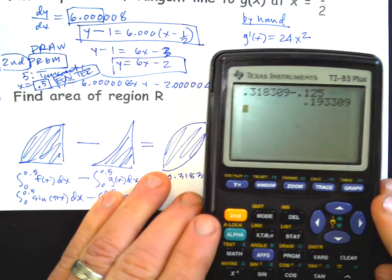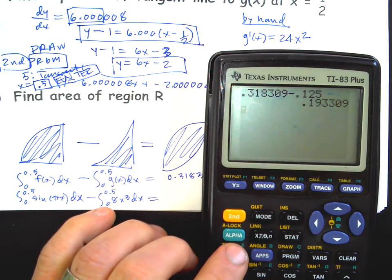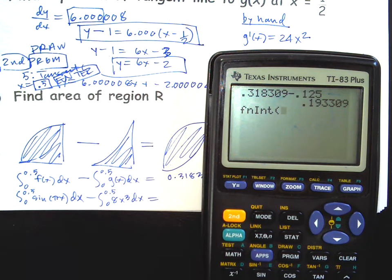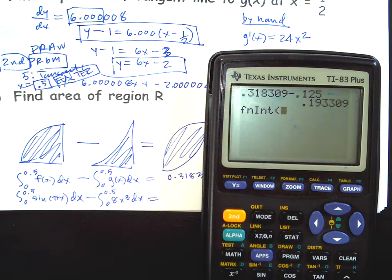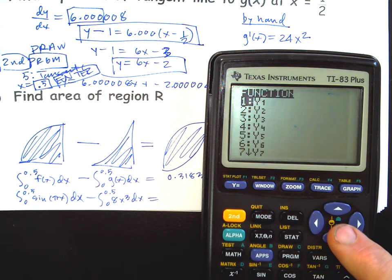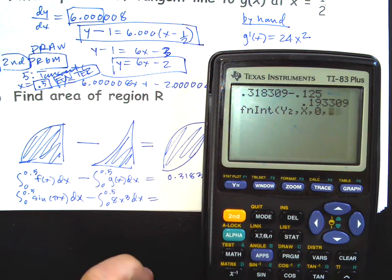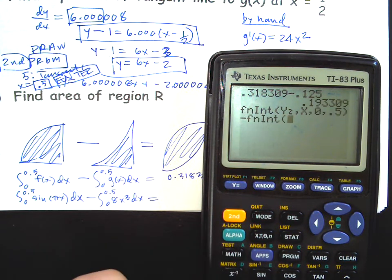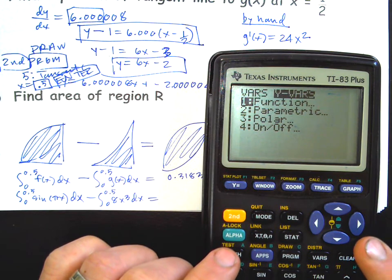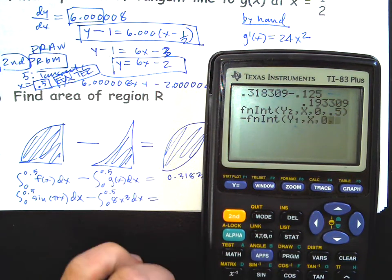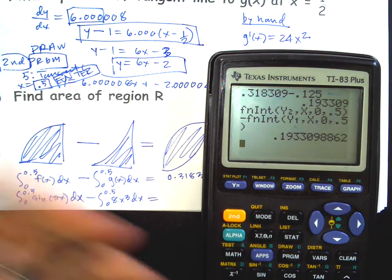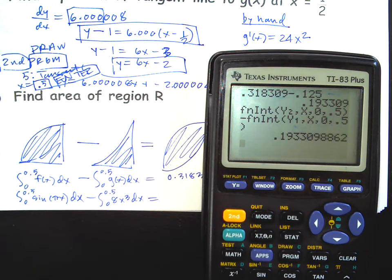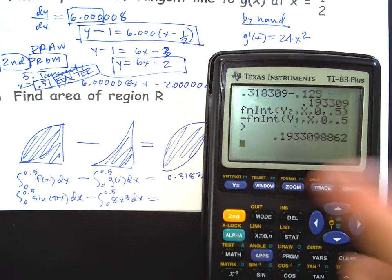Or the way to do it is to just do it all on the home screen which I really am a fan of for multiple curves. So I would do math nine. That's the shortcut, you just hit nine. The numbers on the sides of programs are shortcuts. Math nine, we could do vars y vars function. Now I plugged in the sine curve, comma x comma zero comma 0.5 minus math nine, vars y vars function y1 comma x comma 0 comma 0.5 and then boom, there's the answer. That's kind of a nice thing to do, to do integration without doing it on the graph screen.